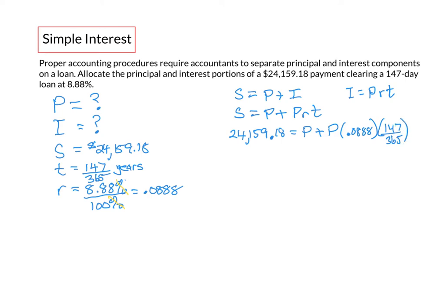We're now ready to solve this equation and BEDMAS tells us we've got to do the multiplication and division before we do the addition. So let's do 0.0888 times 147 divided by 365, or if you like you could do 147 divided by 365 then multiply by 0.0888. That would give us 0.035763287. Again we're keeping all the decimal digits for accuracy.